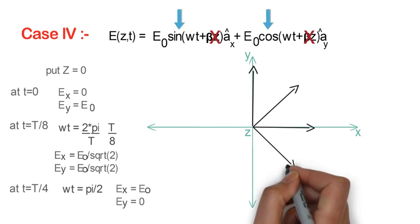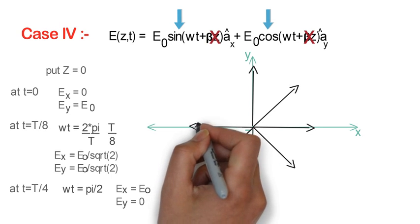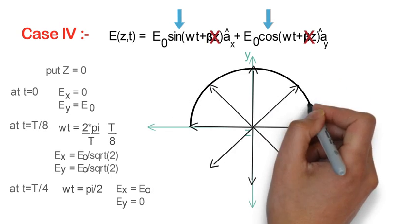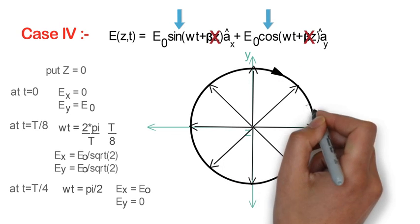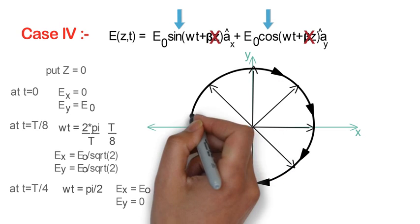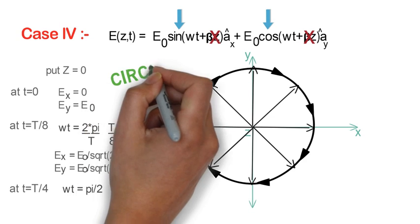In the similar manner, we can get the values of electric field at different angles. And if we match all the arrow heads, we will get a circle in clockwise direction. So this wave is circularly polarized.